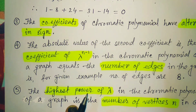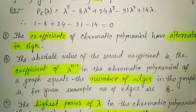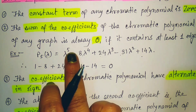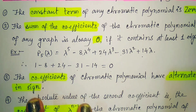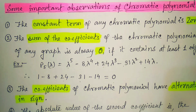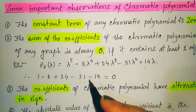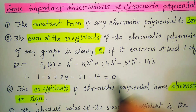The highest power of λ in the chromatic polynomial equals the number of vertices n in G. In our example, the highest power is 5, which denotes the 5 vertices. So by observing the chromatic polynomial alone, you can determine the number of vertices, number of edges, and the minimum number of colors required to properly color the graph.